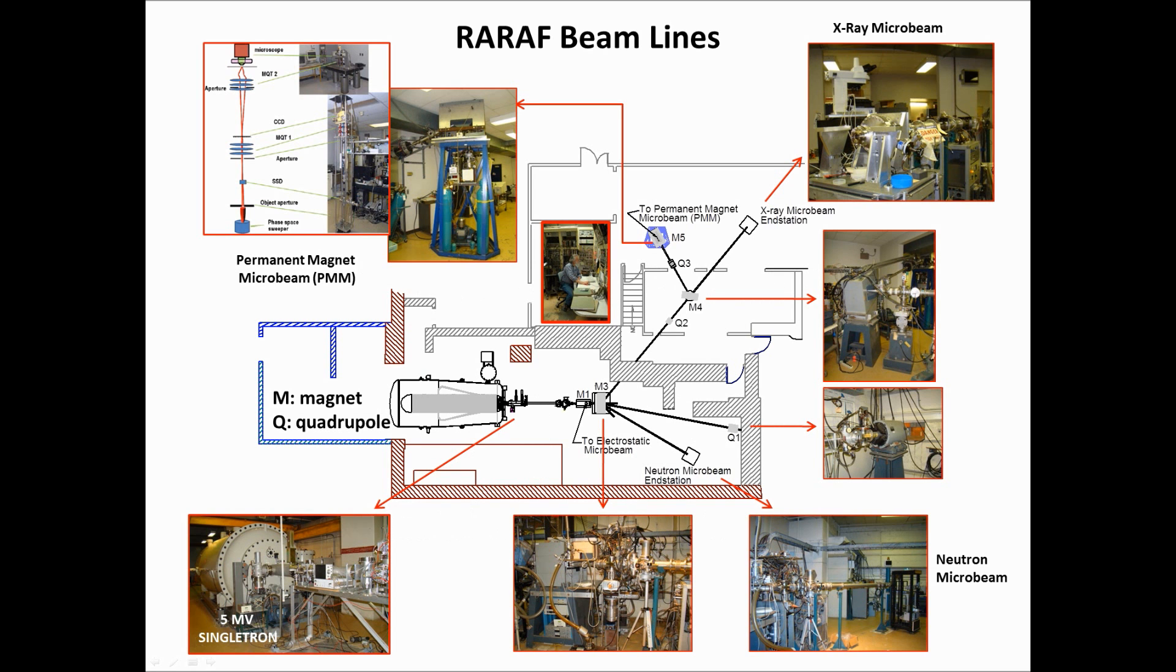So talk about microbeam facilities. This is a schematic or a map of the RARAP facility. We have the accelerator, beam comes out, there's a magnet here, the one that's called M1, takes the beam upstairs for our main microbeam station. There's a switching magnet which puts the beam into various other beam lines.